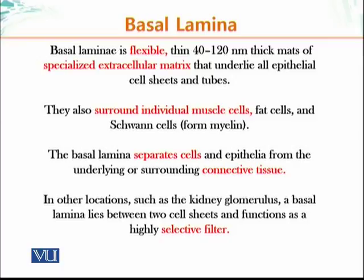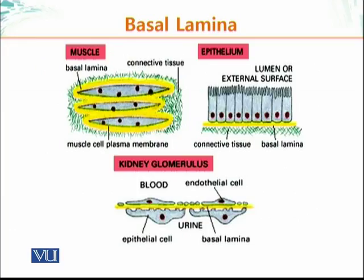The basal lamina separates cells and epithelia from the underlying connective tissue. In locations such as the kidney glomerulus, a basal lamina lies between two cell sheets and functions as a highly selective filter. Basal lamina can perform the function of a filter, determining which molecules can enter or pass through it.